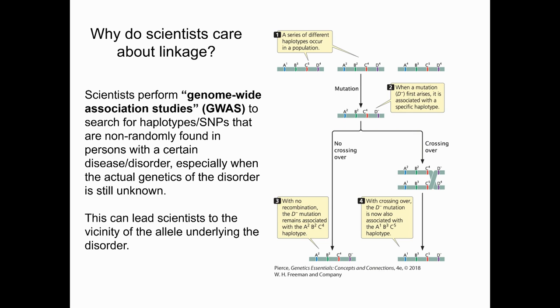So another reason that we care about linkage is we look for haplotypes and groups of SNPs that are found with people who have a disease or disorder when the genetics of the disorder is unknown, and that can help us narrow in to the vicinity of where that not yet discovered gene is actually located. So it can be predictive for helping us to understand what kind of outcomes or what kind of phenotypes might happen in a person, and it can also help us to find genes that we haven't been able to find yet.